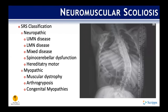A classic broad C-shaped curve is associated with neuromuscular scoliosis. The SRS has broken neuromuscular scoliosis into two broad subcategories: neuropathic and myopathic, with many of the same diagnoses sorted in a different manner.